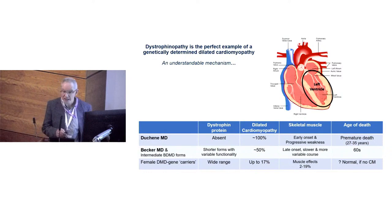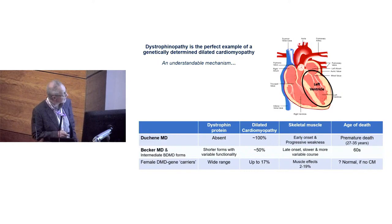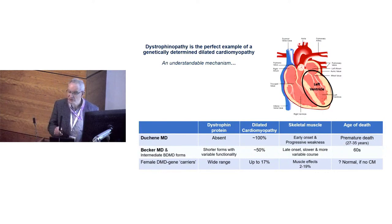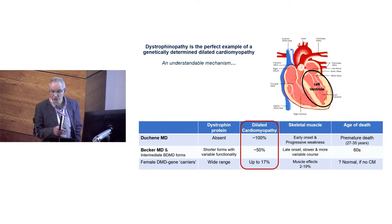If you look at Duchenne, Becker, and carriers, the difference between them is that Duchenne patients have no dystrophin whatever; Beckers have shorter, variable functional forms; and female carriers have various aspects, with a minority manifesting the condition. All Duchenne patients develop cardiomyopathy. About half of Becker patients, perhaps more, develop cardiomyopathy as they get older. Up to 17% of carrier women will manifest muscle, cardiac, or cognitive impairment.